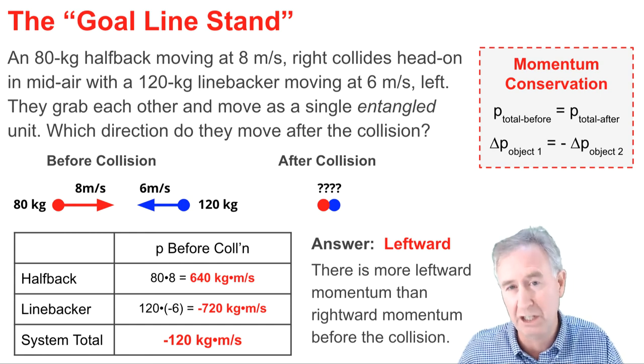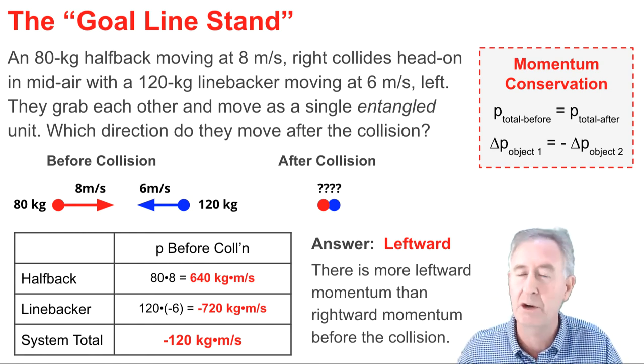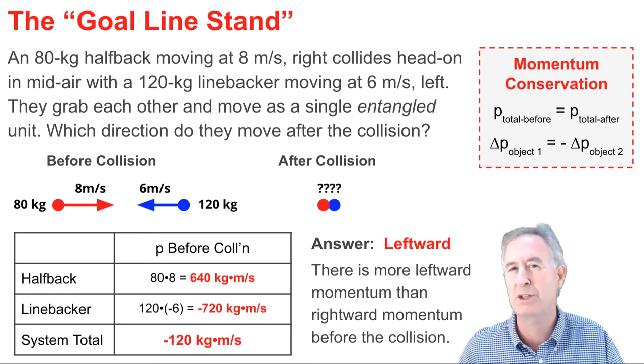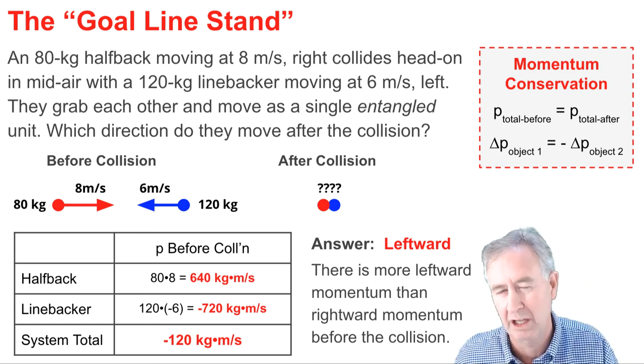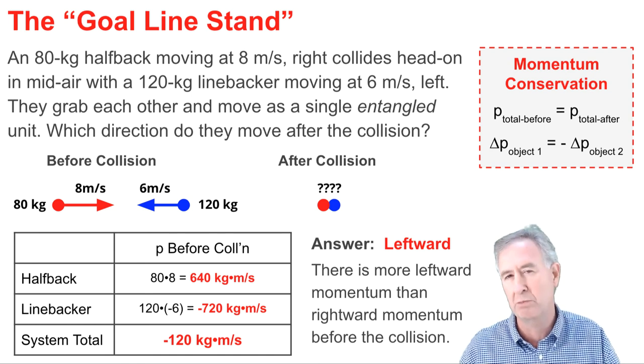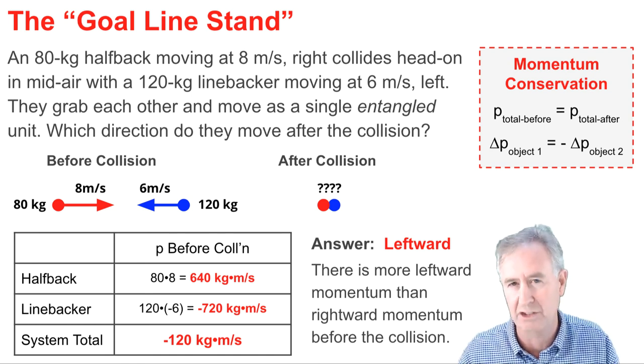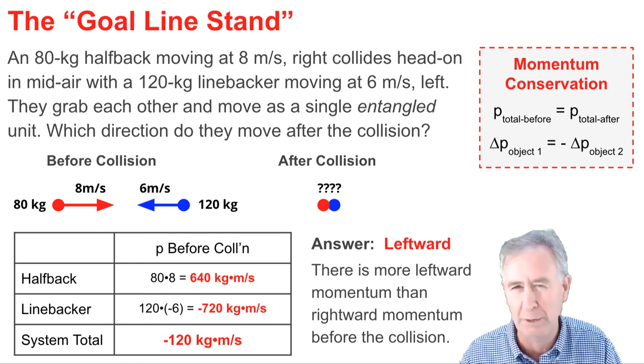And to make such an effective goal line stand, at contact, there must be more momentum against the offensive motion than there is with the offensive motion. That is, the defensive team must put more momentum against the offensive team in order to make that goal line stand.